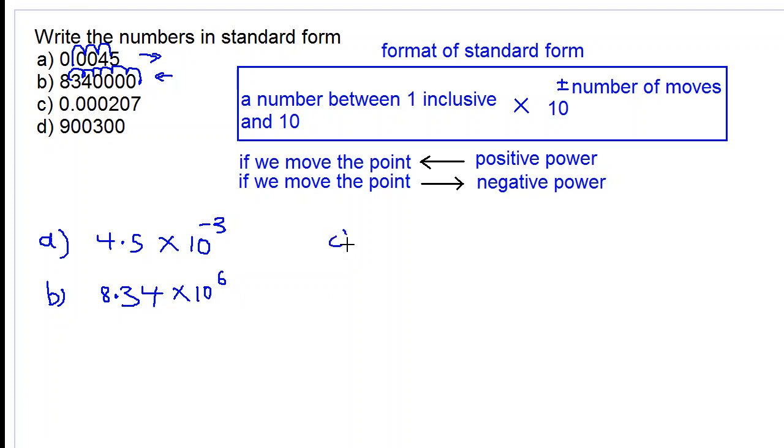Let's look at part C. We move the point this way until we get a number between 1 and 10. So the number looks like 2.07, multiply by 10. Let's look at the direction. We went this way, and so we have a negative power. Let's count how many times we move: 1, 2, 3, 4. We get negative 4.